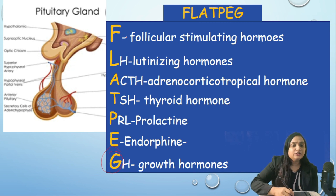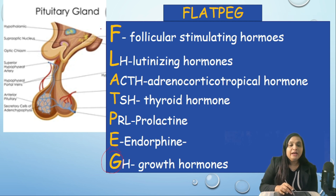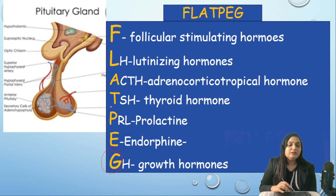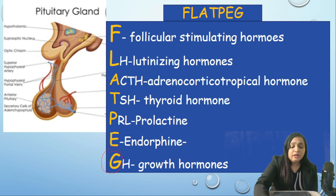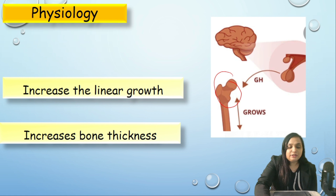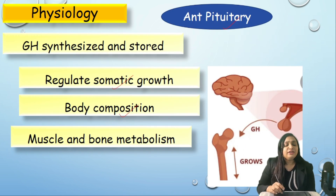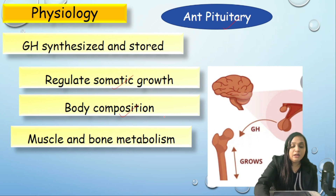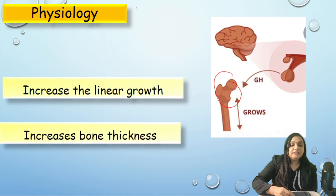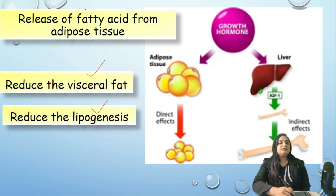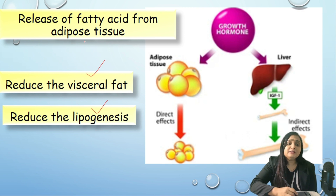A quick revision of pituitary physiology: the mnemonic FLAT PEG helps remember pituitary hormones — FSH, LH, ACTH, TSH, Prolactin, Endorphin, and Growth Hormone. Growth hormone is secreted and stored in the anterior pituitary. Its three important functions are: regulation of somatic growth, body composition, and muscle and bone metabolism. On bone, it increases linear growth and bone thickness; on fat tissue, it reduces visceral fat, lipogenesis, and fatty acid release from adipose tissue.